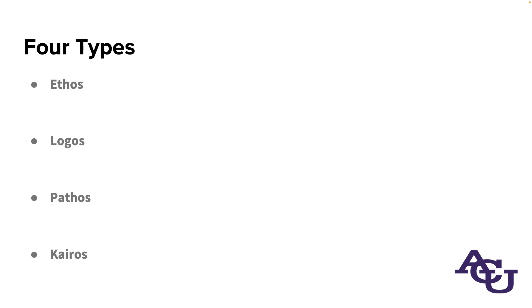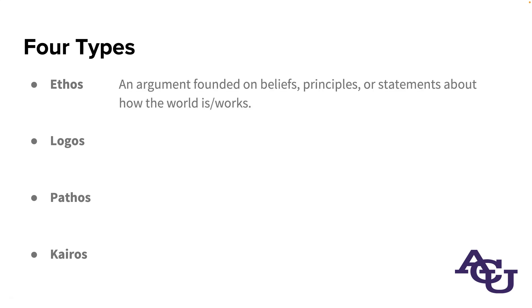Let's go back through those again. Ethos is an argument founded on beliefs, principles, or statements about how the world is or how it works—when you say this is right or this is wrong, that is an ethos statement. Logos, on the other hand, is about cause and effect: this because of that; or if you value this, you should do this; or you need this, therefore you should buy this other thing; or this will make you feel better and you want to feel better, so you should do this.